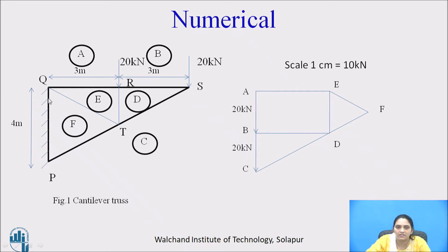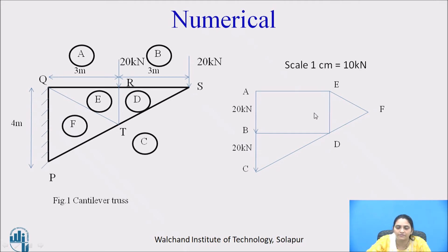Now, to measure a member force, for example member QR: it lies between spaces E and A, so locate E and A in the force diagram and simply measure the length of AE. When drawn to scale it is 3 cm, which according to the scale is 30 kN. Similarly, measure all the lengths to find out all the member forces.